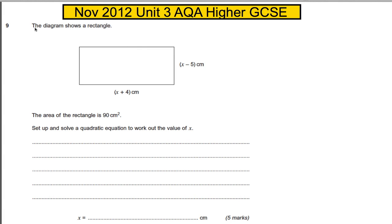Hey, question 9. The diagram shows a rectangle. The area of the rectangle is 90 centimeters squared. The length, the longer one, is x plus 4, and the width, the shorter one, is x subtract 5.